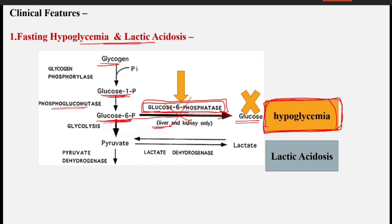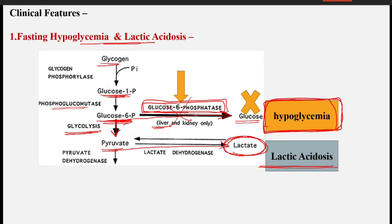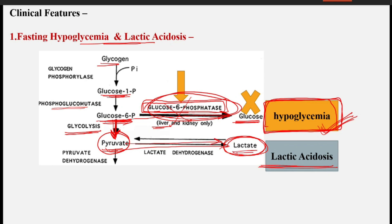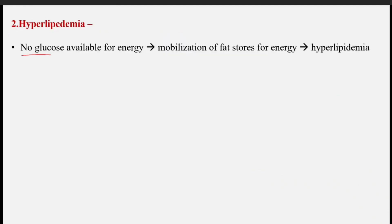The alternative pathway is that glucose-6-phosphate is converted into pyruvate through glycolysis, which is again converted into lactate. This is how lactate accumulates in these patients, causing lactic acidosis. So glucose-6-phosphate is not converted into glucose due to the absence of glucose-6-phosphatase, causing fasting hypoglycemia, and because glucose-6-phosphate is diverted through glycolysis to pyruvate and then lactate, lactic acidosis results.